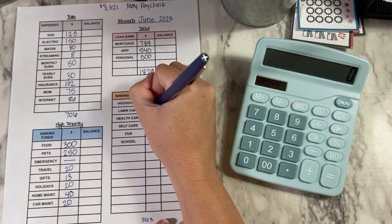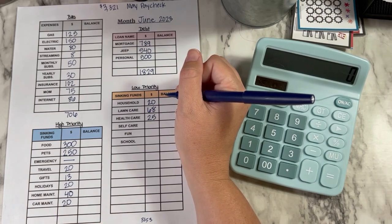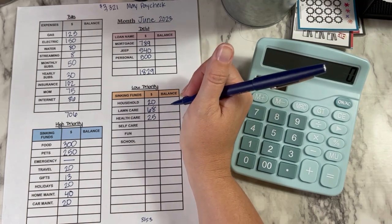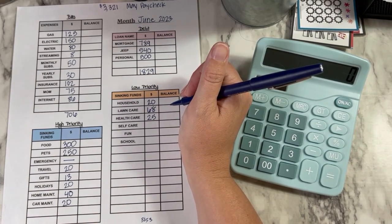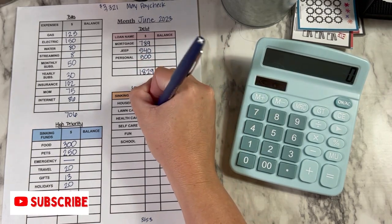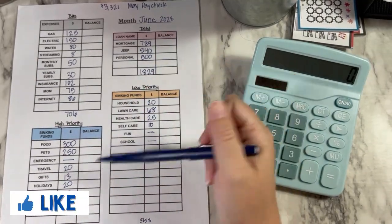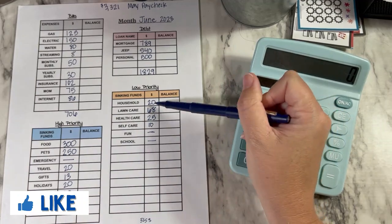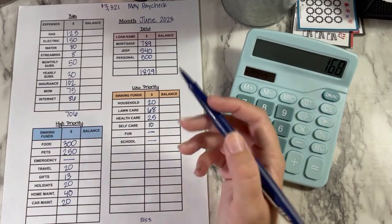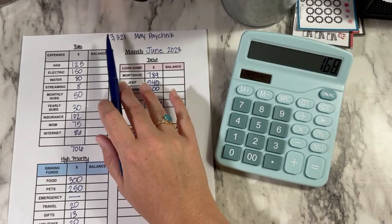Healthcare, I'm doing 25 this time. I have my eye appointment coming up in, I think, the beginning of August. So I want to make sure I have plenty of money to cover my copay and my contacts. And then self-care is getting 10. And then we're not doing anything in fun or school this time. And so then what I do is I add up those things that I just put on there for the sinking funds and just make sure that it equals the 168. And it does. So all of this should equal the amount at the top here. And it does.